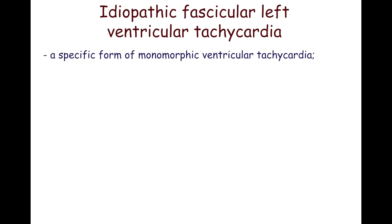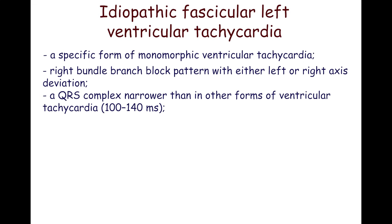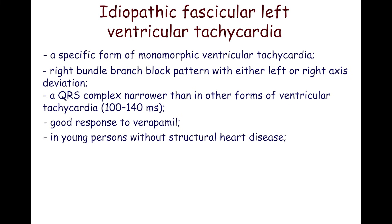Idiopathic fascicular left ventricular tachycardia is a specific form of monomorphic ventricular tachycardia. Its ECG features include a right bundle branch block pattern with either left or right axis deviation, a QRS complex narrower than in other forms of ventricular tachycardia — usually 100–140 ms — and good response to verapamil. It usually occurs in young persons without structural heart disease.